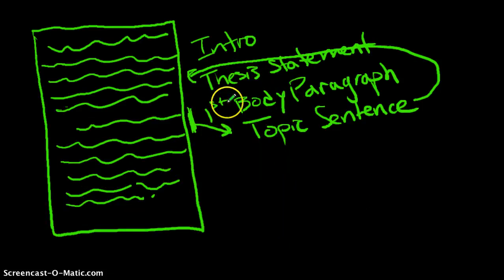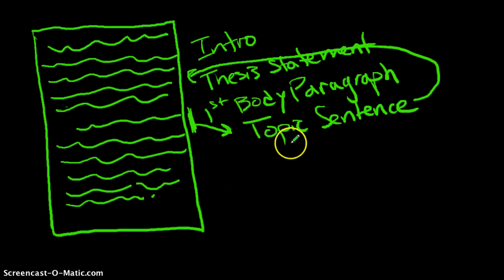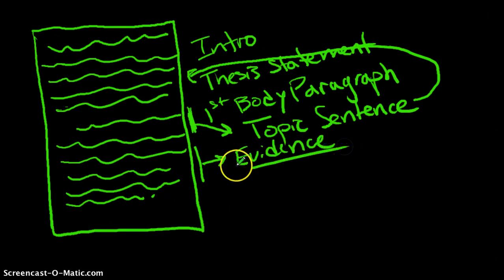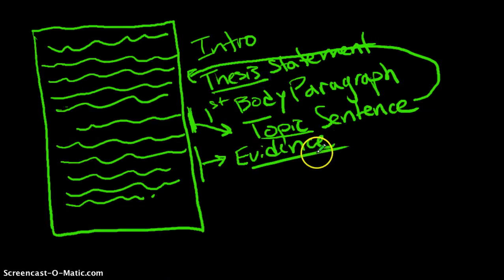If your topic sentence does not directly relate to the thesis statement, and if your evidence doesn't relate back to the thesis statement, there's something structurally wrong with your paper. Either you need to rethink your thesis statement, or you may need to drop that body paragraph content and start over with a new idea. So the topic sentence frames what you'll be discussing, and then in the body of the paragraph you include evidence — quotes, stats, research — to support both your topic sentence and your thesis statement.